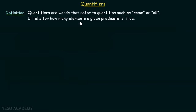Quantifiers tell us for how many elements a given predicate is true. If a predicate is given to us, we can identify for how many elements that predicate is true with the help of quantifiers.